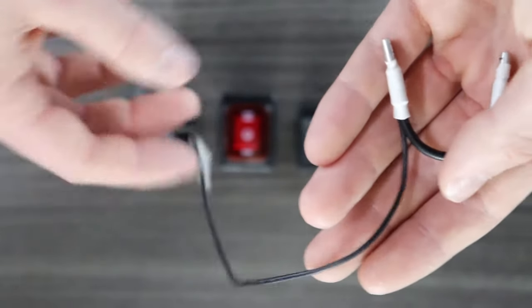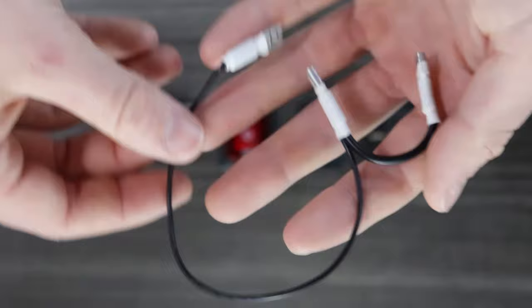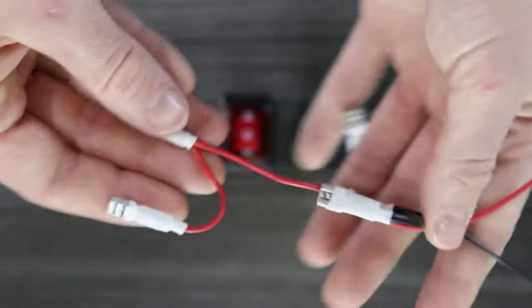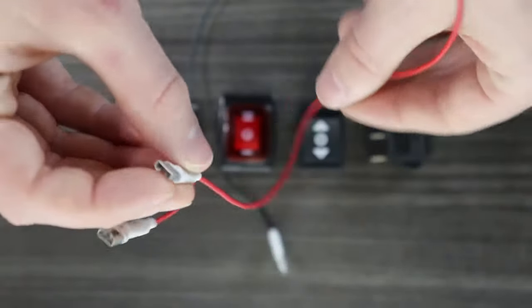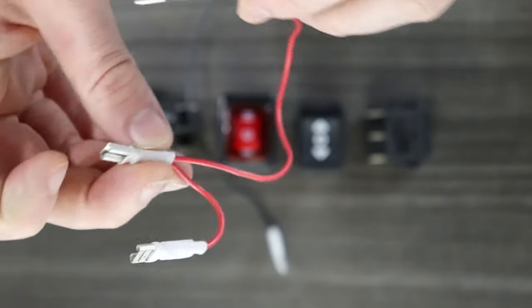You'll first want to create a wiring harness by crimping three female spade connectors to two wires as shown here. Repeat this process a second time.